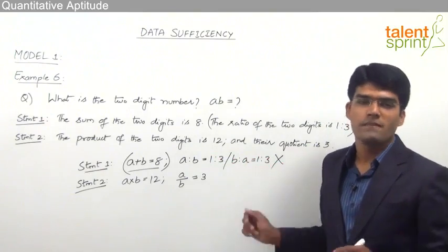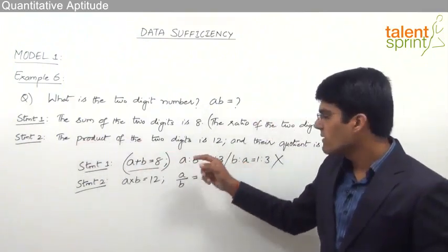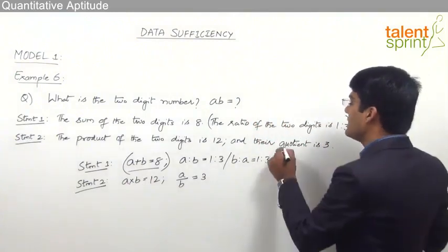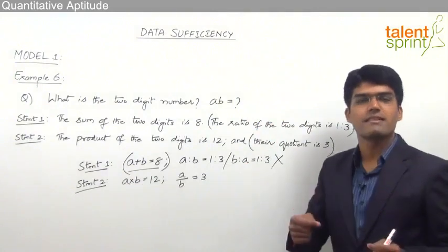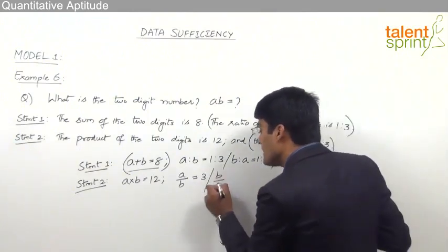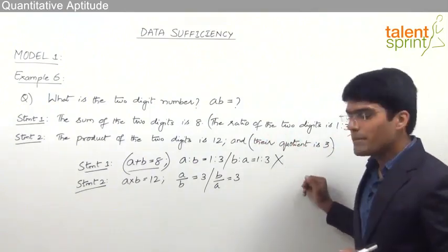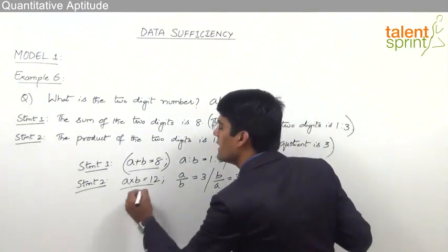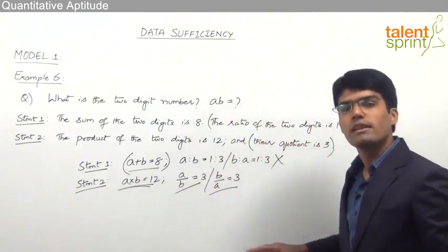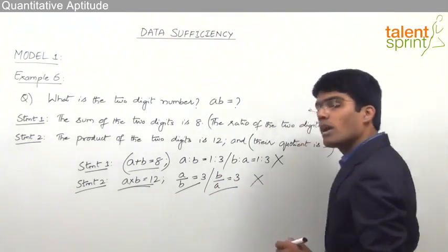Now let's see what is the problem with Statement 2. The product A into B equals 12 doesn't cause an issue since multiplication is commutative. But the second part — their quotient is 3 — is problematic. The statement simply says the quotient is 3, but whether it is A by B equals 3 or B by A equals 3 has not been specified. So again we get two possible answers, and Statement 2 alone is also not sufficient.